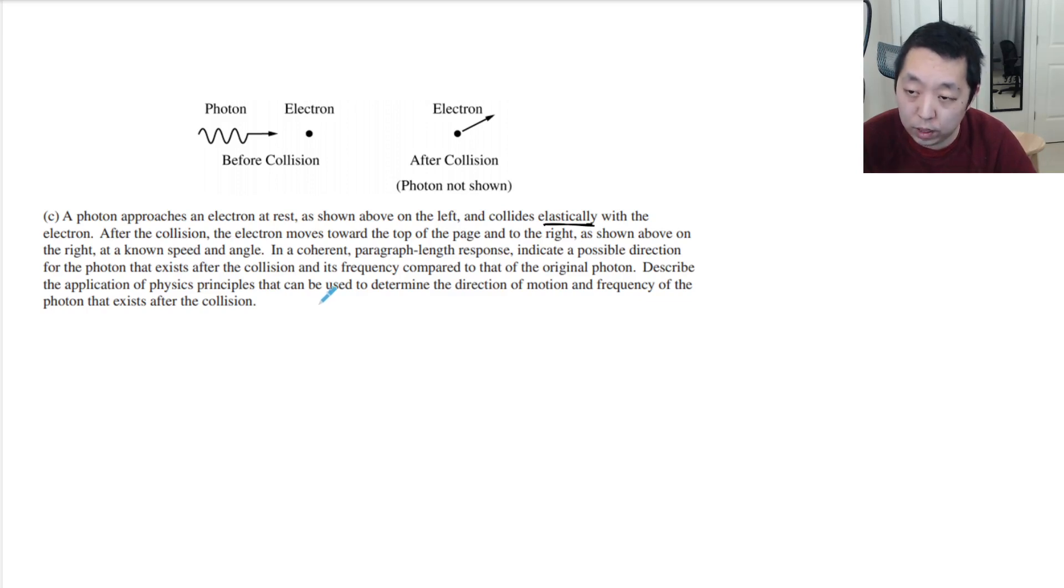So basically the two principles I'm going to apply here is the photon has some momentum going to the right. And afterwards the photon has some momentum and the electron has some momentum. Conservation of momentum basically says that the momentum before should equal the momentum after. So we should use conservation of momentum. We should always use conservation of energy because energy is always conserved. So this is the two main principles I want to apply. I want to use conservation of energy and conservation of momentum.